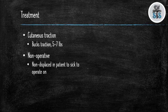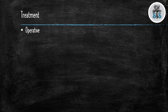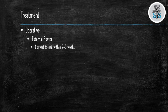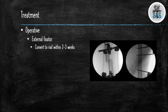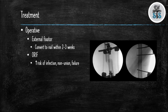Historically, these injuries could be treated non-operatively, but today all are treated operatively unless the patient is too sick or adamantly refuses surgery. If the patient is hemodynamically unstable and damage control orthopedics is chosen, an external fixator can be placed for temporary stabilization and converted to a nail within two to three weeks. Open reduction internal fixation is not the preferred treatment for an isolated femoral shaft fracture as it has an increased risk of infection, non-unions, and failure.